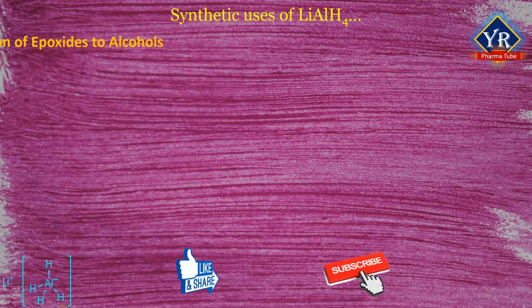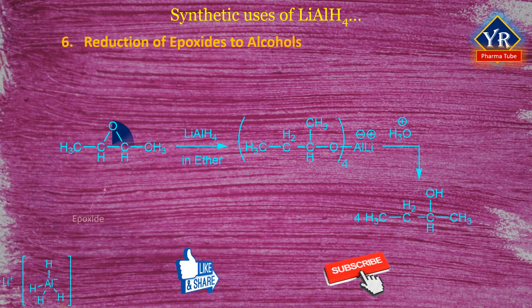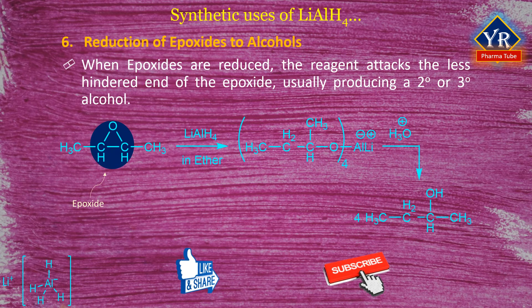Number 6: Reduction of epoxides to alcohols. When epoxides are reduced using lithium aluminium hydride, the reagent attacks the less hindered end of the epoxide, usually producing a secondary or tertiary alcohol. The regiochemistry and regioselectivity of the product depend highly on the substitution of the epoxide ring carbons.